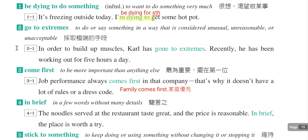第二个片语是go to extremes，注意extremes要加s，表示采取极端的手段。例句：In order to build up muscles, he has gone to extremes. Recently he has been working out for five hours a day，每天健身五个小时，运动过量对身体也会造成很大的伤害。